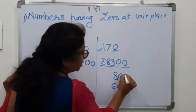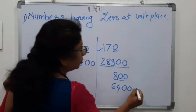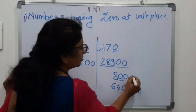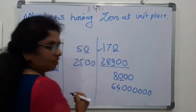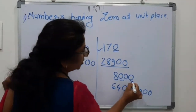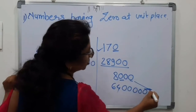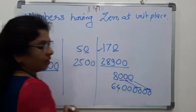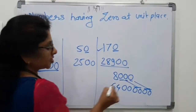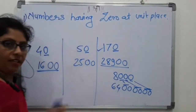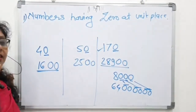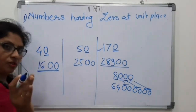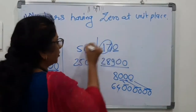If there is one more zero, write down two more zeros. For every one zero in the number, there is one pair of zeros in the square. In this way, we can find the square of any number having zeros at the unit place — you just need to know the square of the previous number without the trailing zero.